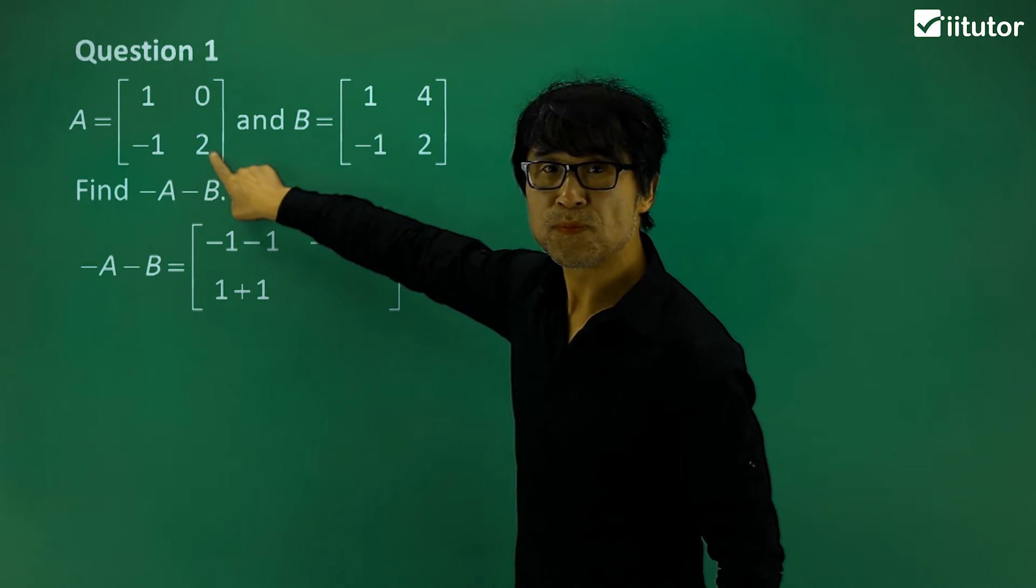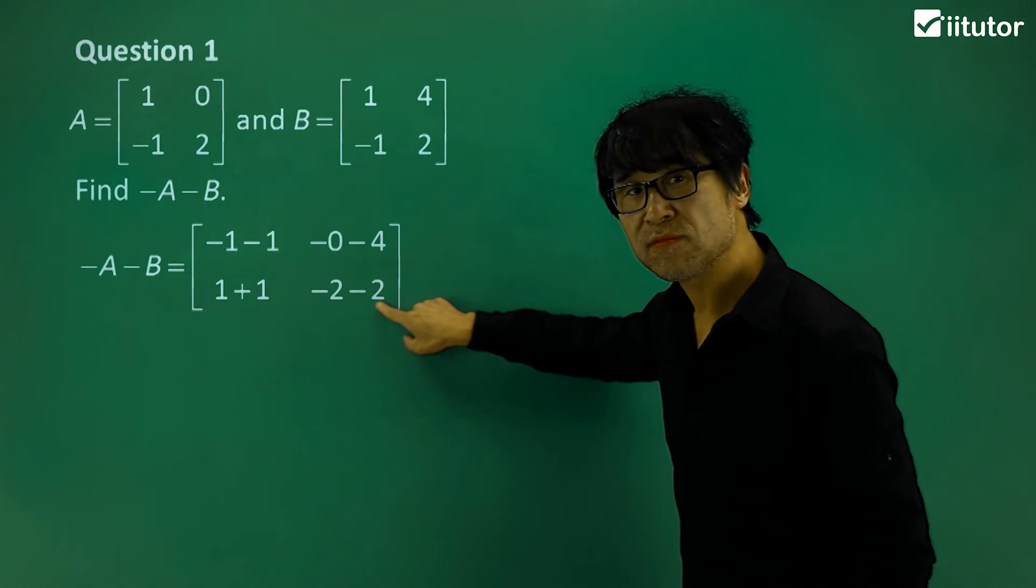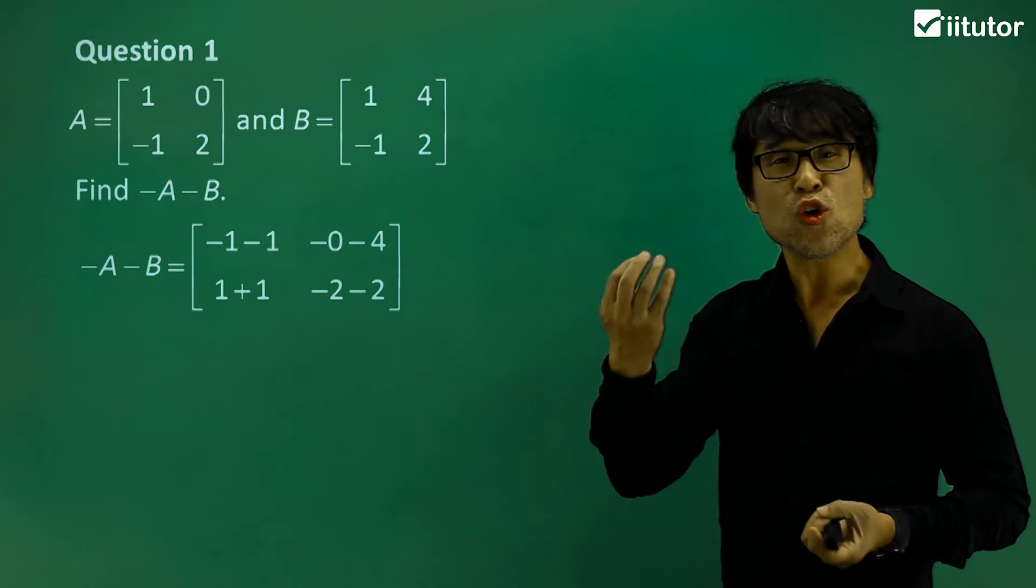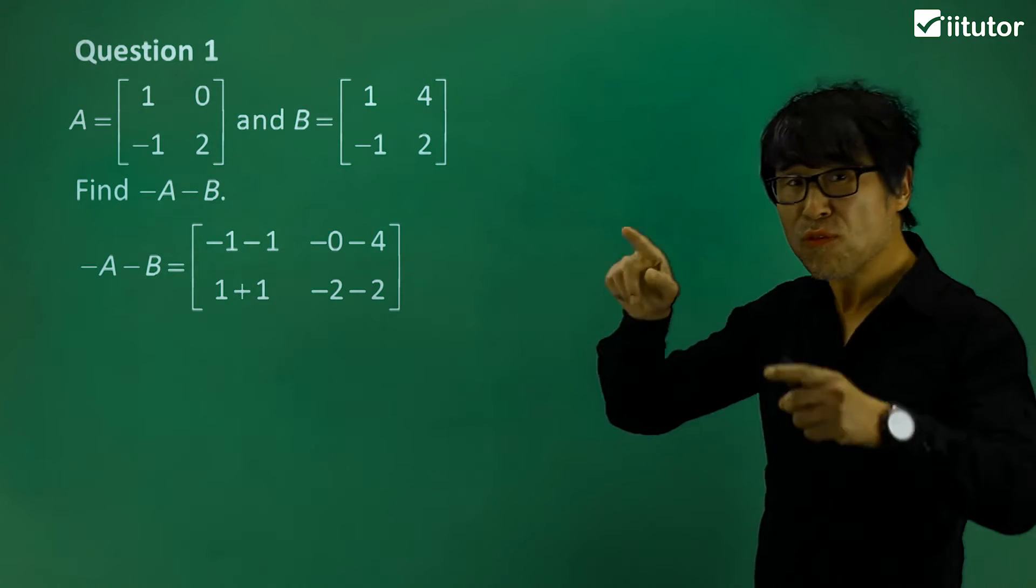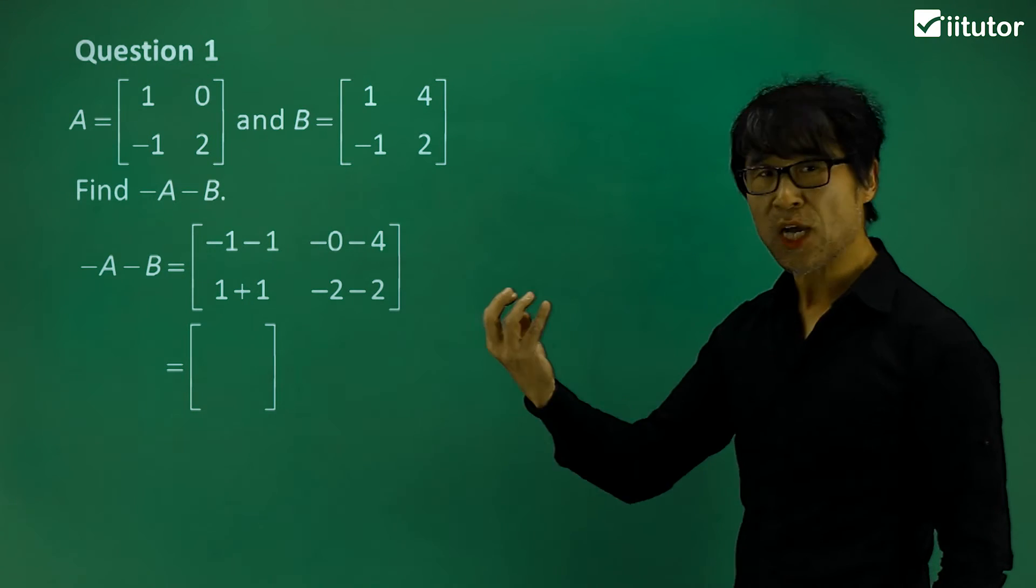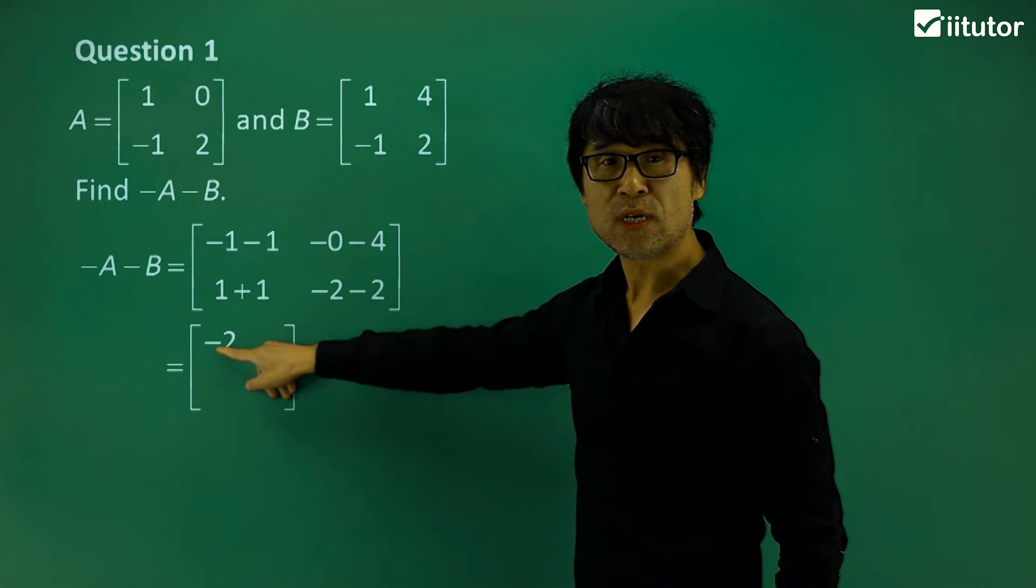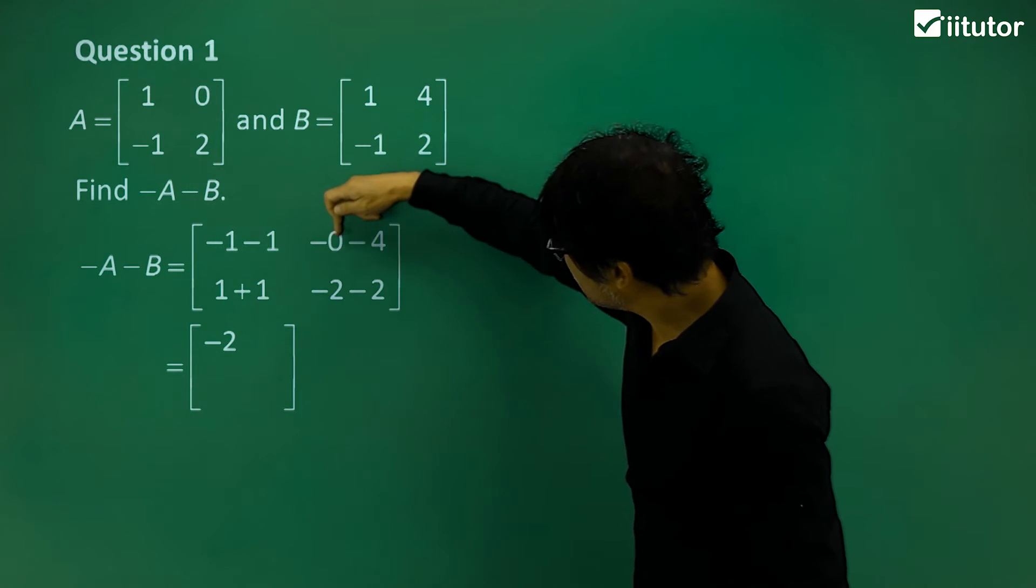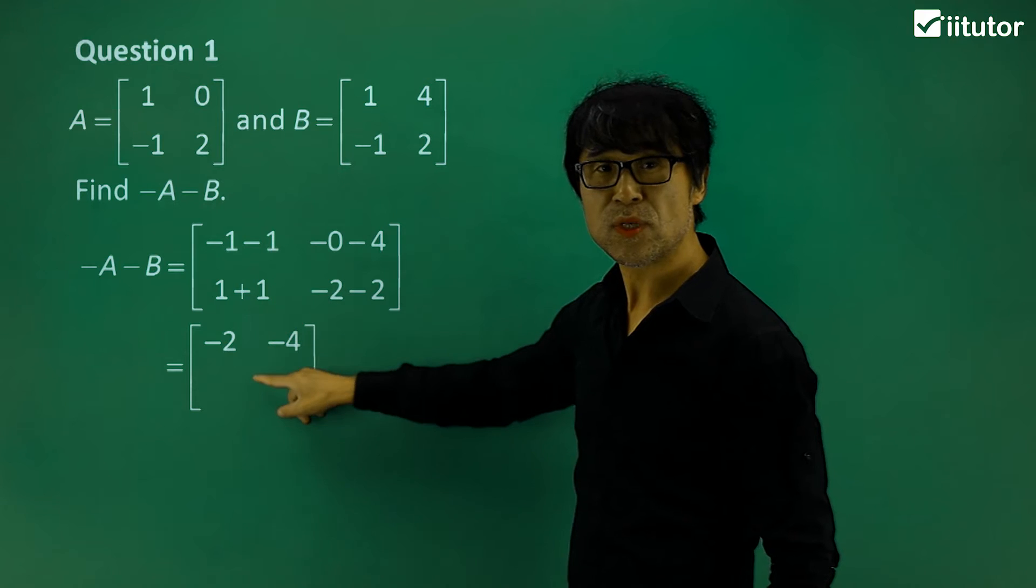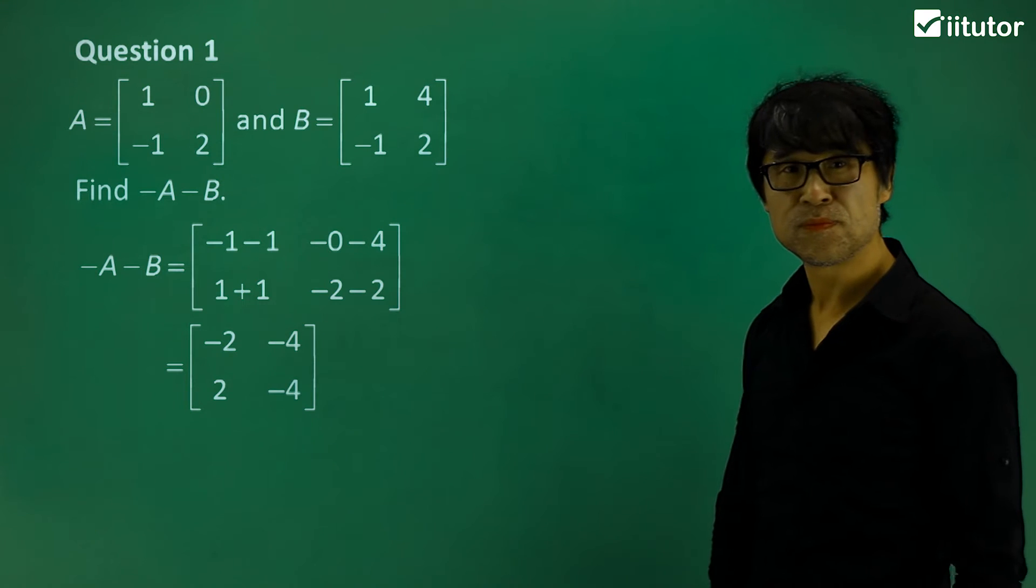What else? So we have 2 and 2, so which is negative 2 and negative 2. So that's the kind of working, kind of operation. And the next step is to write your answer. So how do you write the answer? Make a preparation, write your matrix form over here. All you need to do is just calculate. Negative 1 minus 1 is simply negative 2. Negative 0 minus 4 is negative 4. What else? 1 plus 1 is simply 2. Negative 2 minus 2 is just negative 4. Do you understand that?